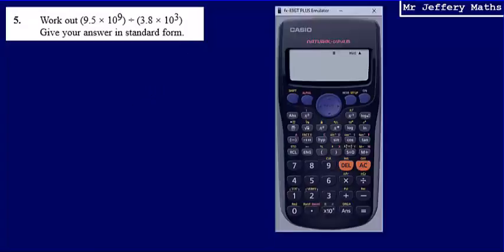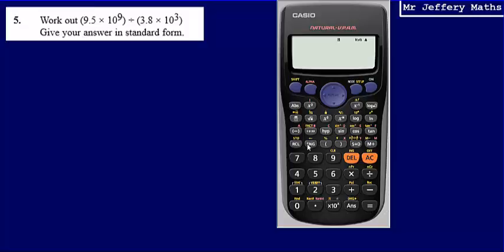So this is a calculator paper, so this should be nice and straightforward. Just typing this into our calculator, 9.5 times 10 to the power of 9. And we're taking that and we're dividing it by 3.8 times 10 cubed.